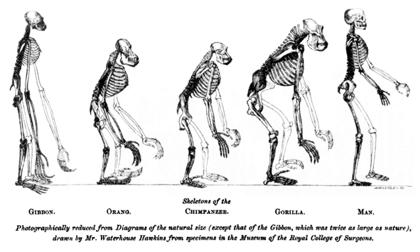Domesticated animals are known as breeds, normally bred by a professional breeder, while domesticated plants are known as varieties, cultigens, or cultivars. Two purebred animals of different breeds produce a crossbreed, and crossbred plants are called hybrids.